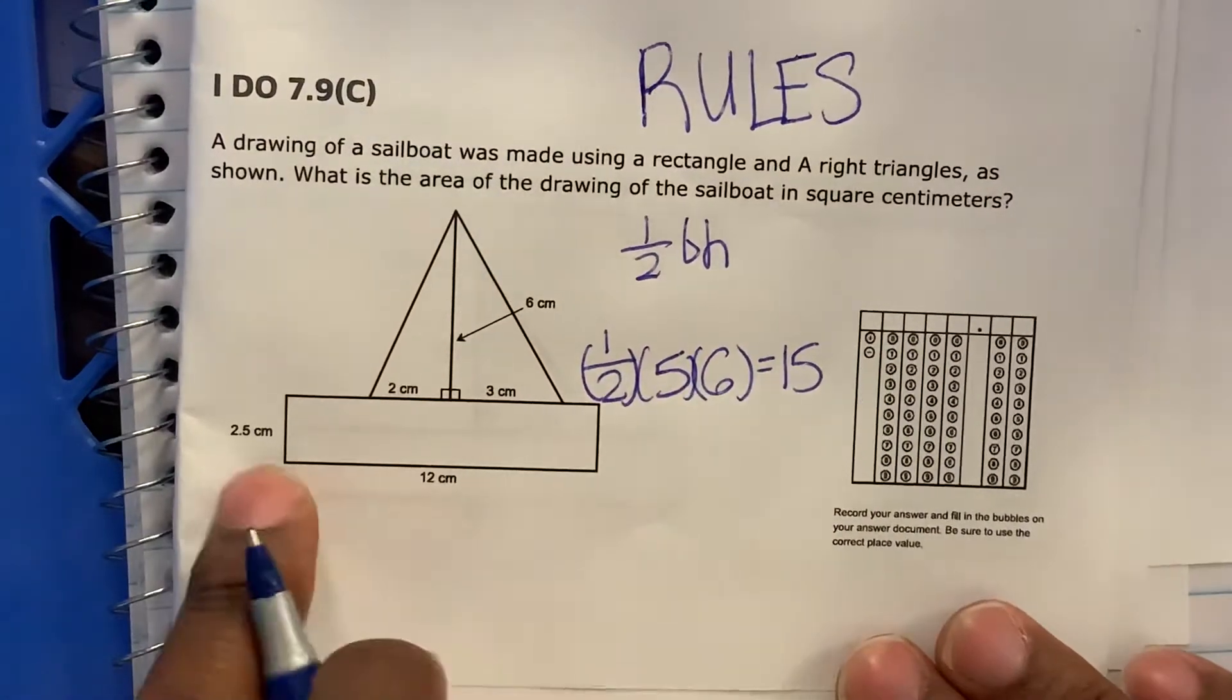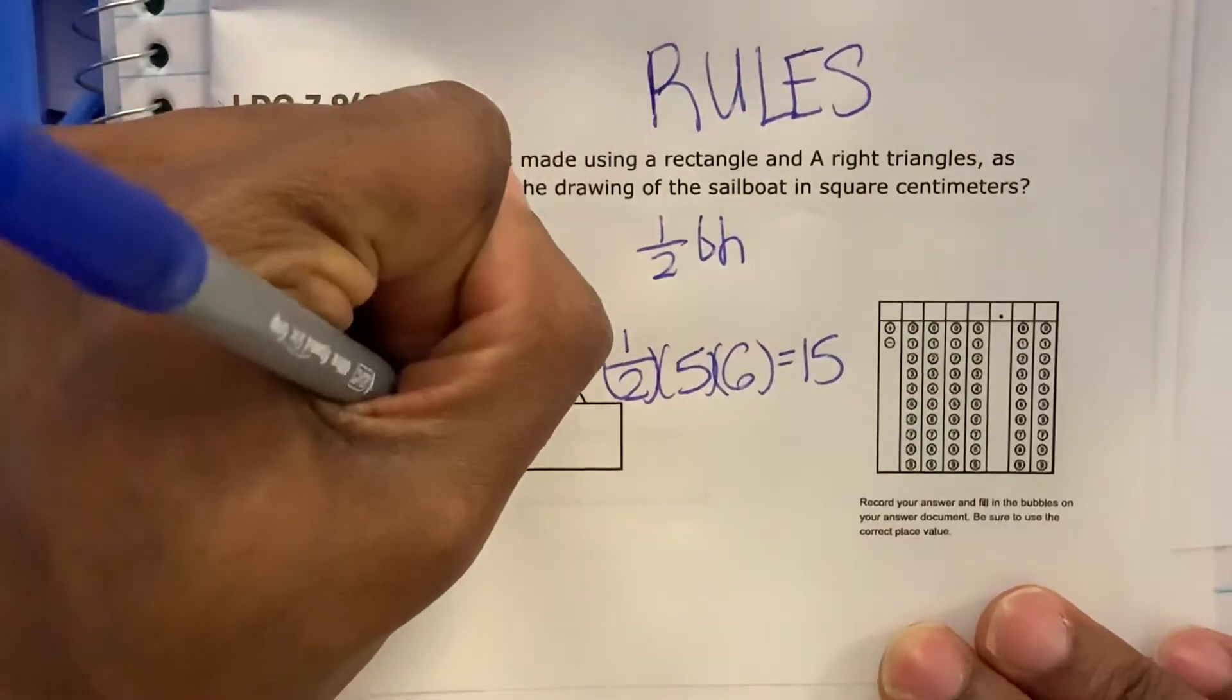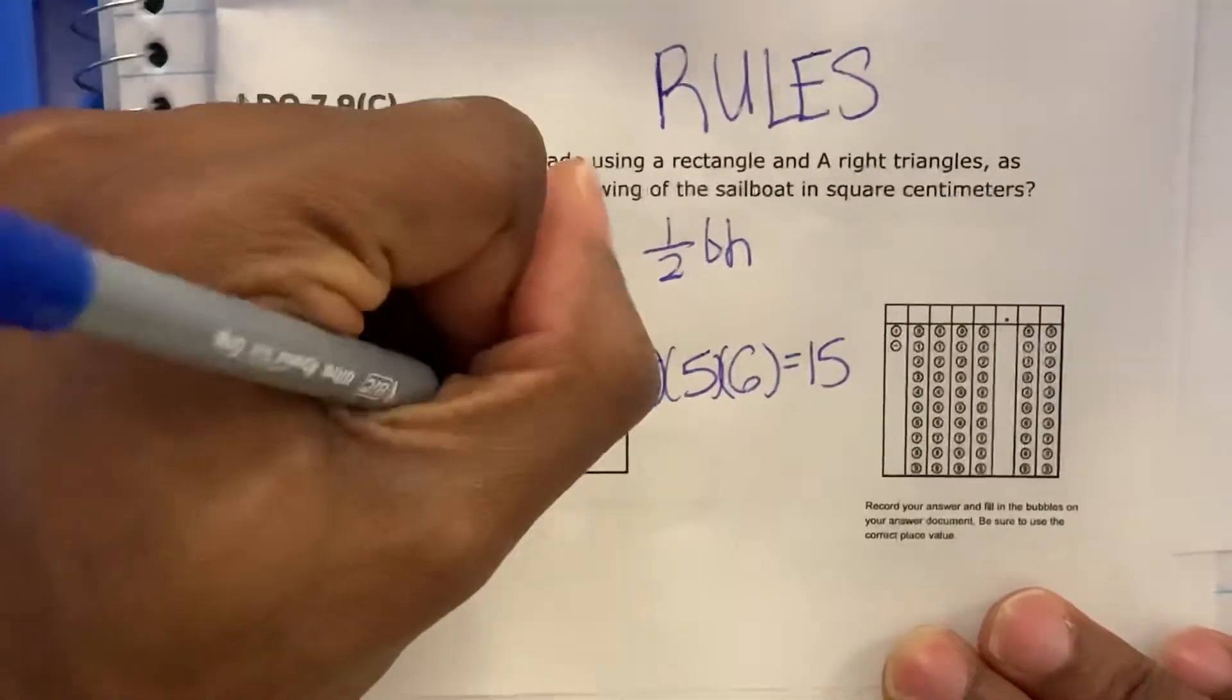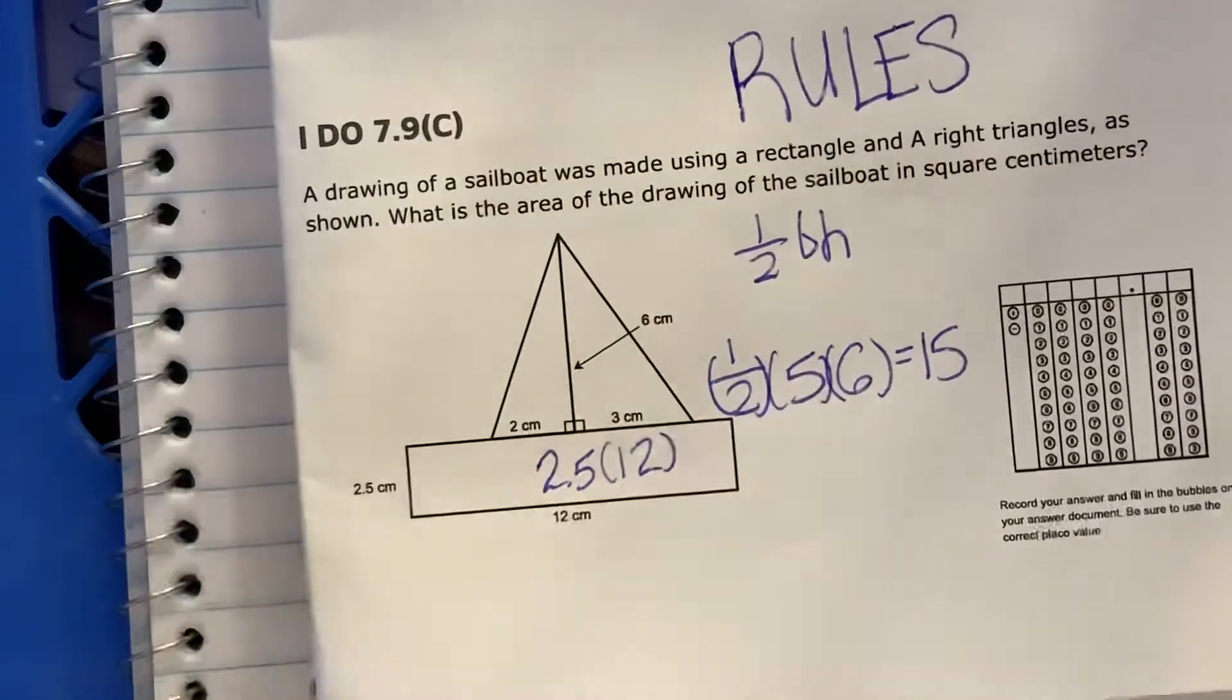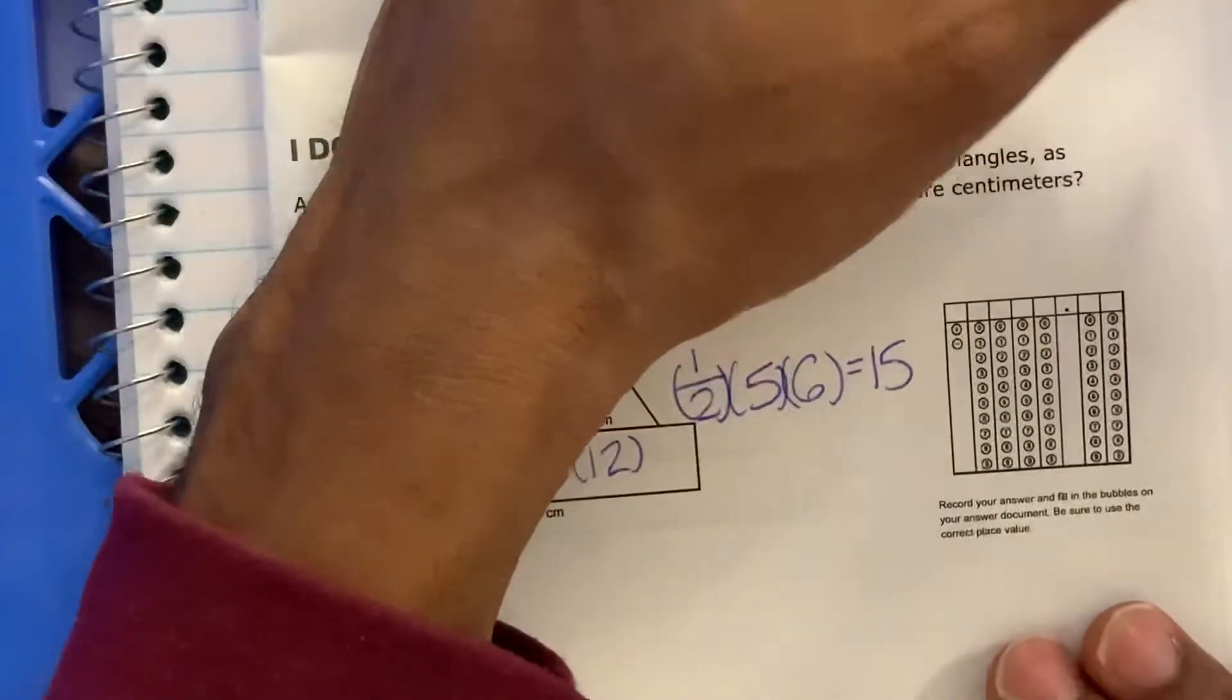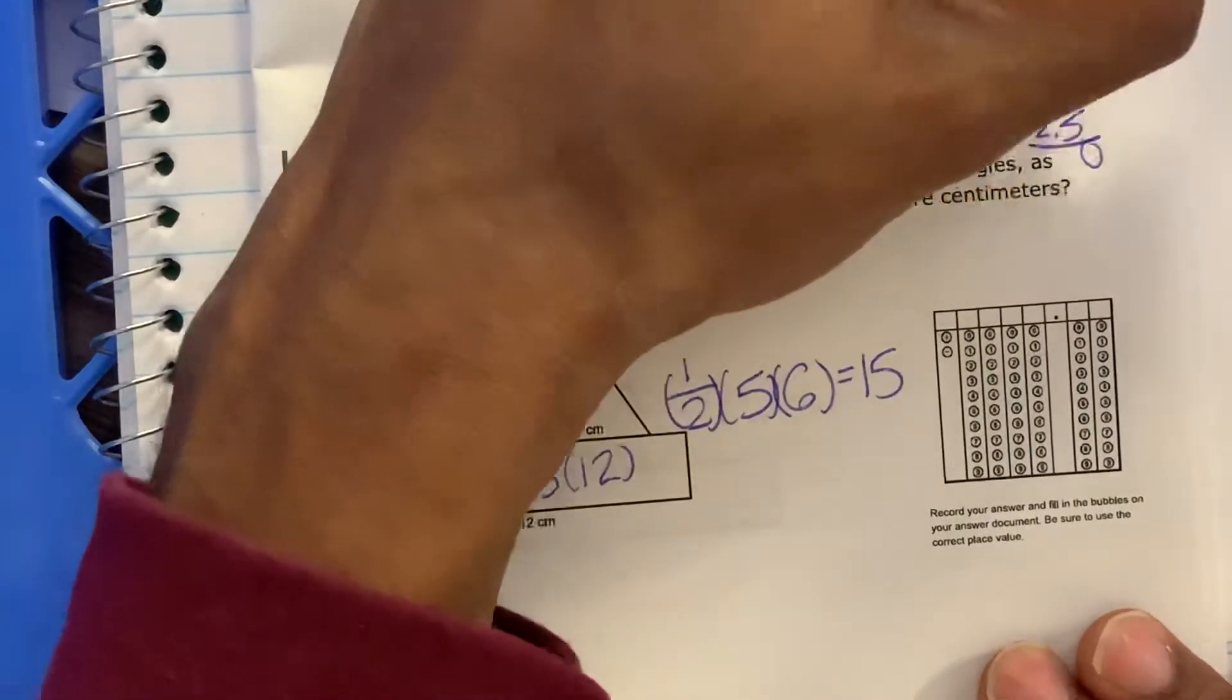Now let's find the area of this rectangle, which would be 2.5 multiplied by 12. All right, so let's multiply this out. Let's go up here where we have a little bit of space. So 12 multiplied by 2.5. 5 times 2 is 10, carry the 1.